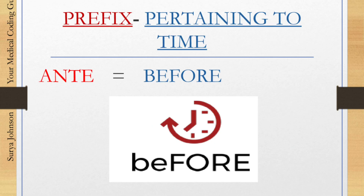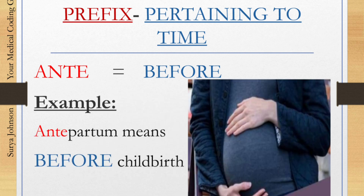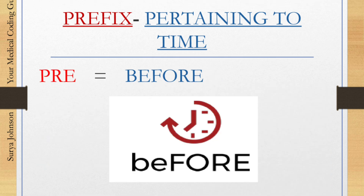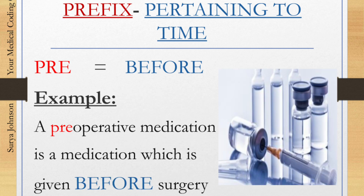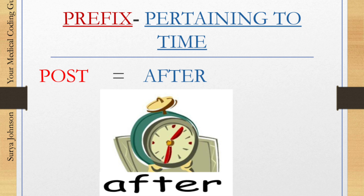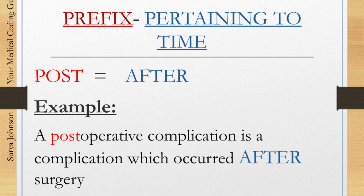First one: 'ante.' Ante means before. For example, antepartum means before childbirth. Second one: 'pre.' Pre also means before. For example, preoperative medication is a medication which is given before the surgery. The prefix 'post' means after. For example, a postoperative complication is a complication which occurred after the surgery.